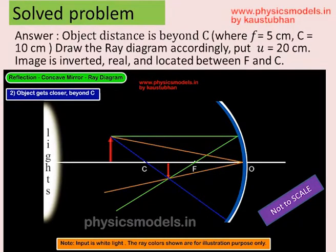The point F is focal length which is at 5 centimeters, so the point C should be at 10 centimeters from O, and therefore the red arrow, the object, should be at 20 centimeters from O.